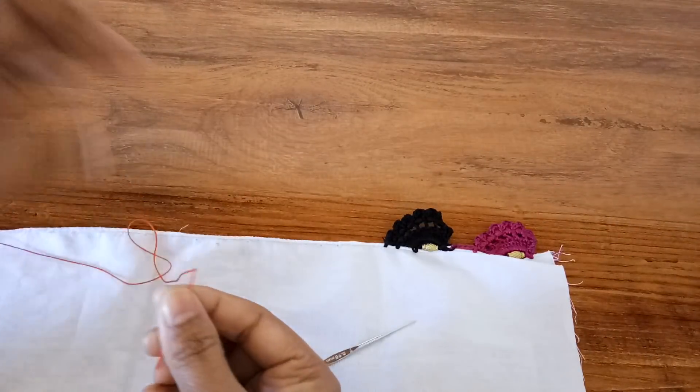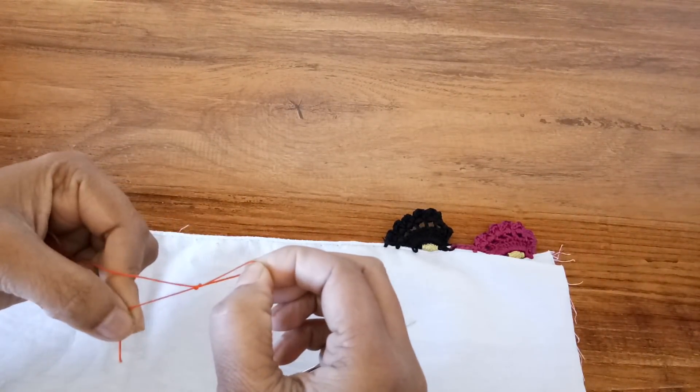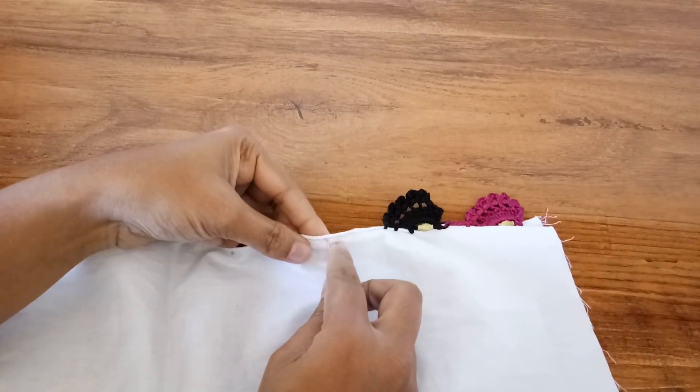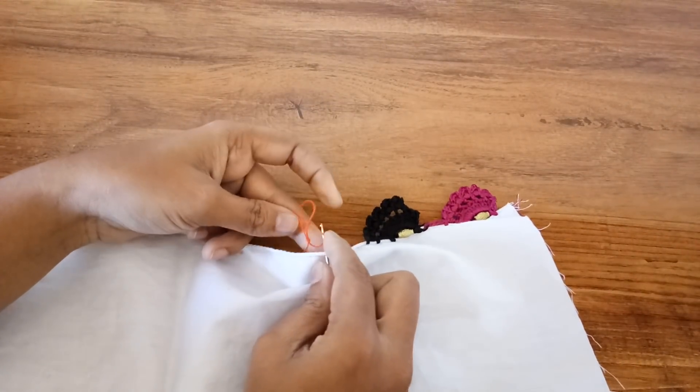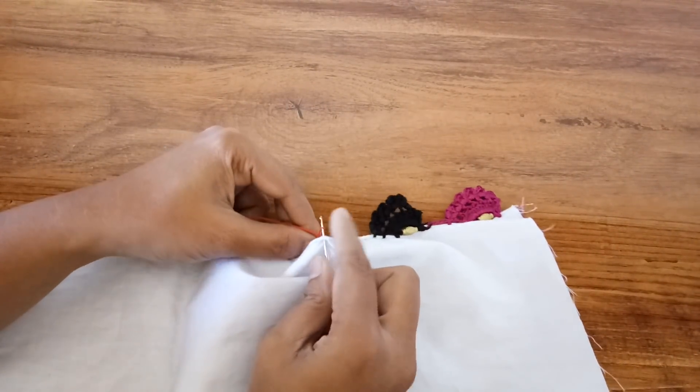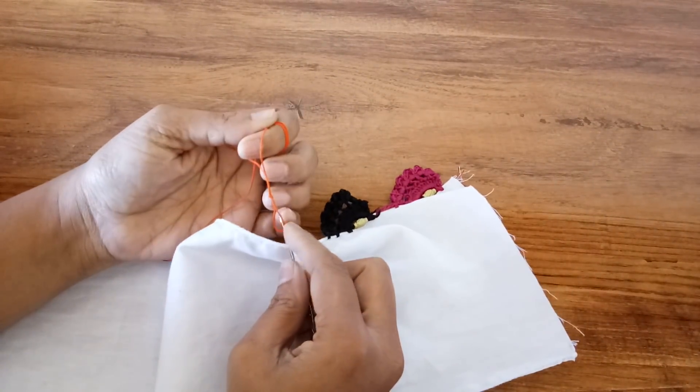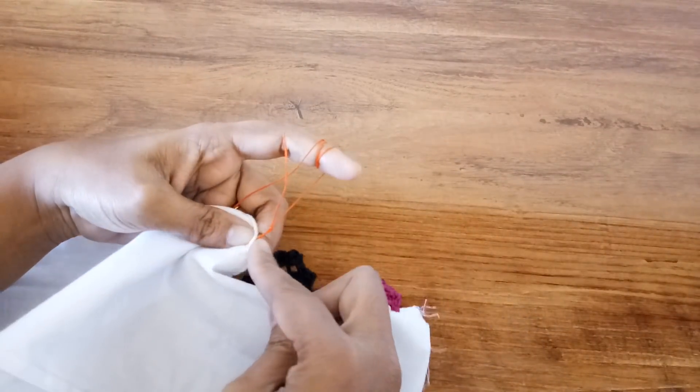For this I'm just going to make a slip knot and hold it from the back side, insert the needle and just pull the thread.